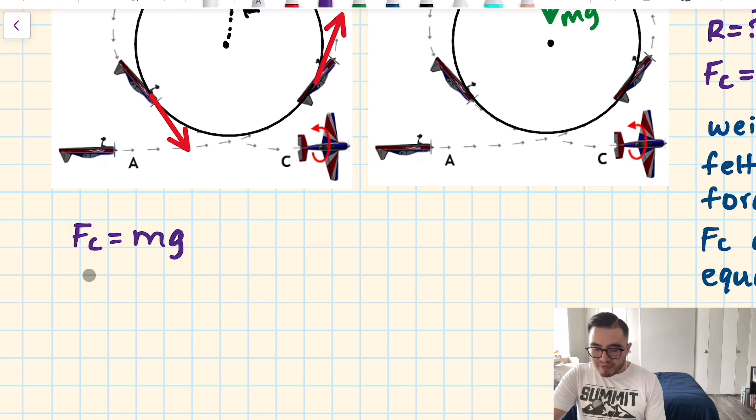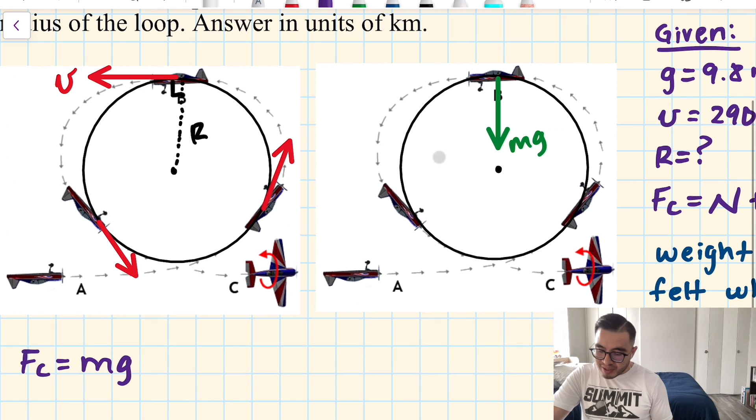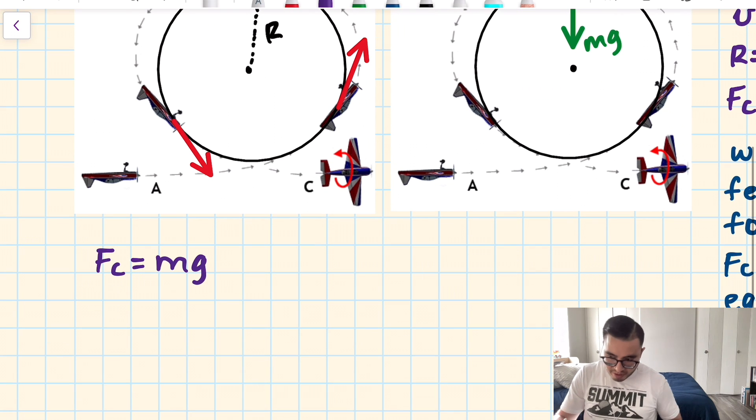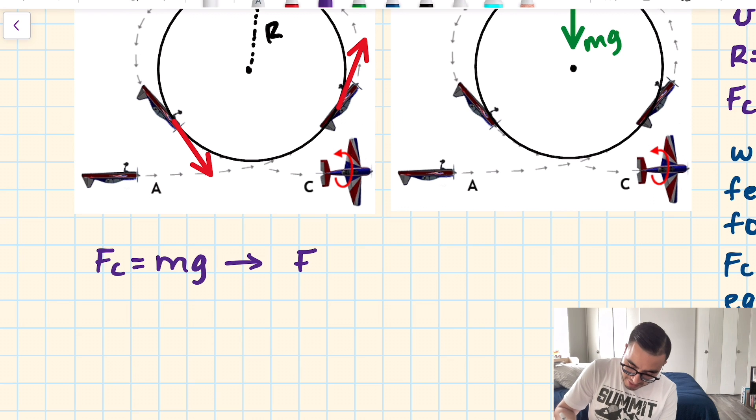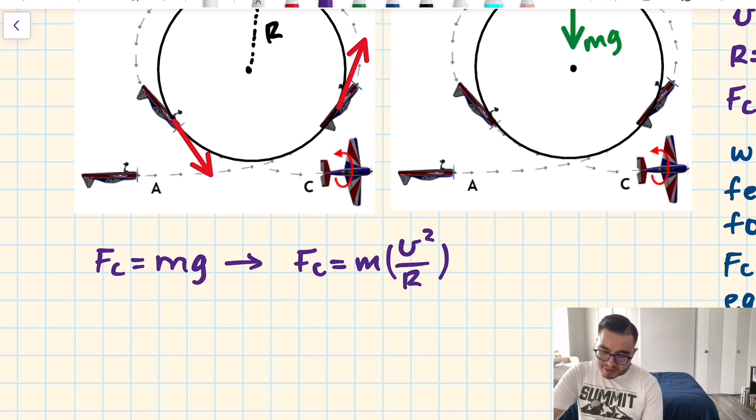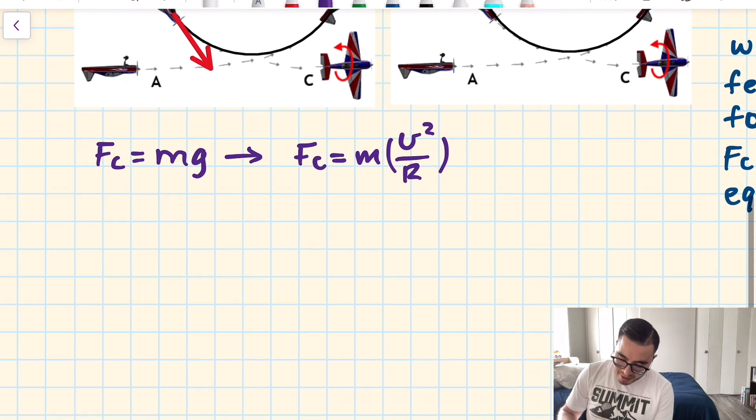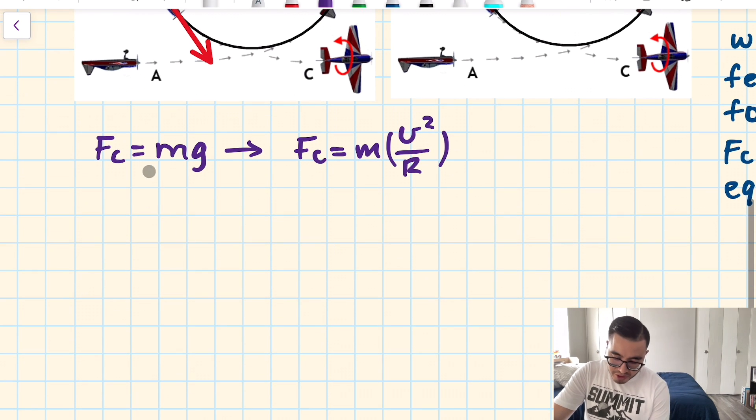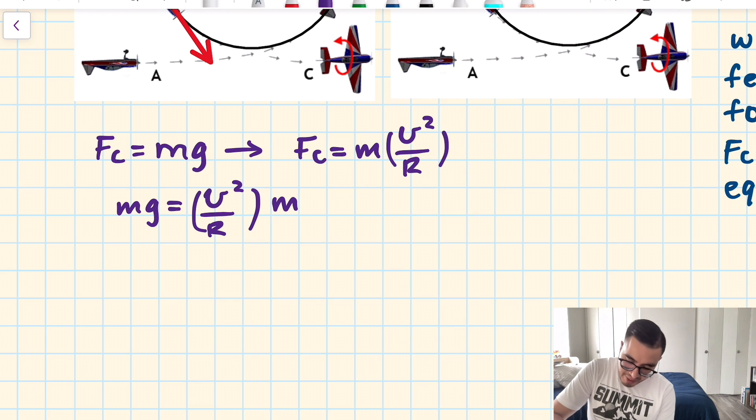Centripetal force is equal to the weight. And now we have to think, what do we do? We were given three different formulas for centripetal force. Which one do we pick? We have velocity. We need to find radius. That means we should use the one that has those two variables. And that one defines the centripetal force as the mass times the velocity squared divided by the radius. Now we'll set these two equal to each other, the right sides.